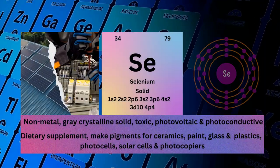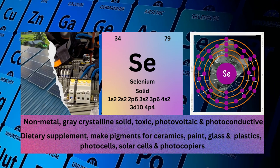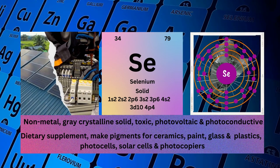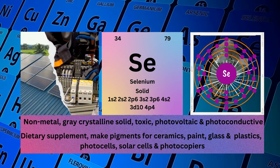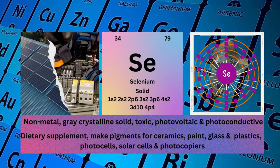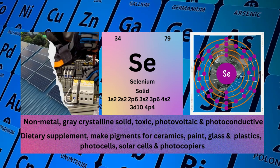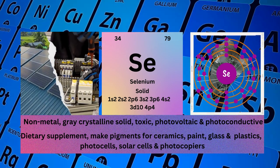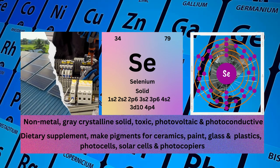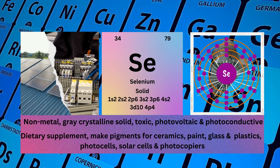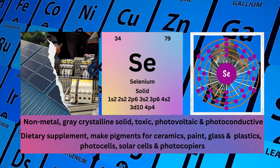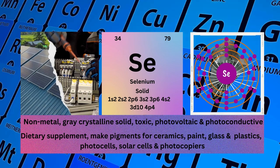Selenium. Atomic number 34. Mass number 79. Symbol SE. State solid. Electronic configuration 1s2 2s2 2p6 3s2 3p6 4s2 3d10 4p4.